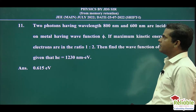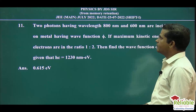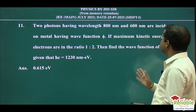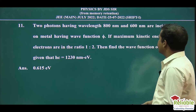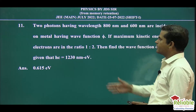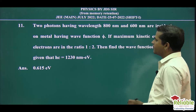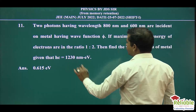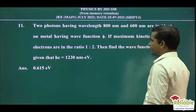Question number 11 is modern physics. Two photons having wavelengths 400 and 600 nanometers are incident on a metal. The maximum kinetic energy of electrons ratio given is 1:2. You have to find the work function, where the Hc value is 1230 nanometer electron volt.